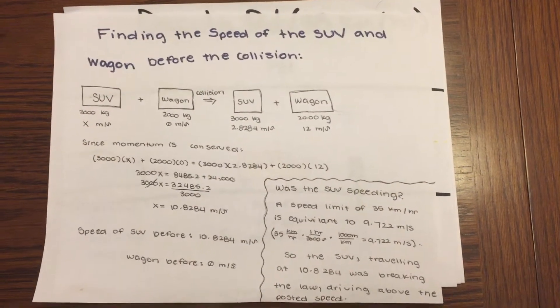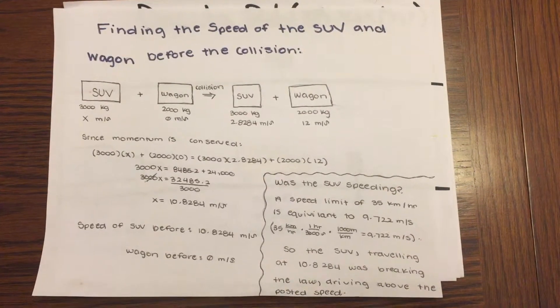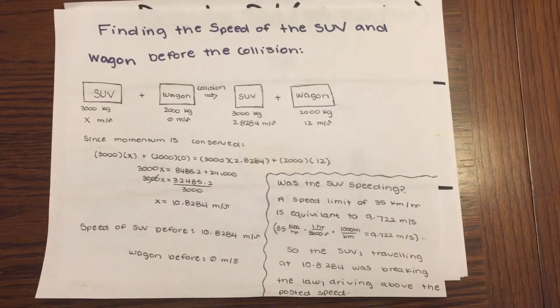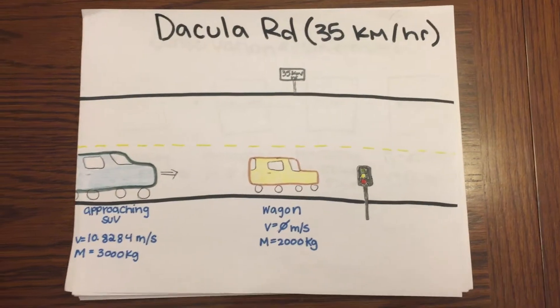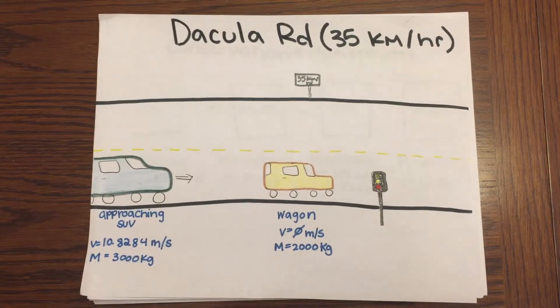Using the conservation of momentum, the speed of the SUV will be calculated to be 10.8284 meters per second. This means that the SUV was traveling at speeds greater than 35 kilometers an hour or 9.72 meters per second when colliding with the wagon.